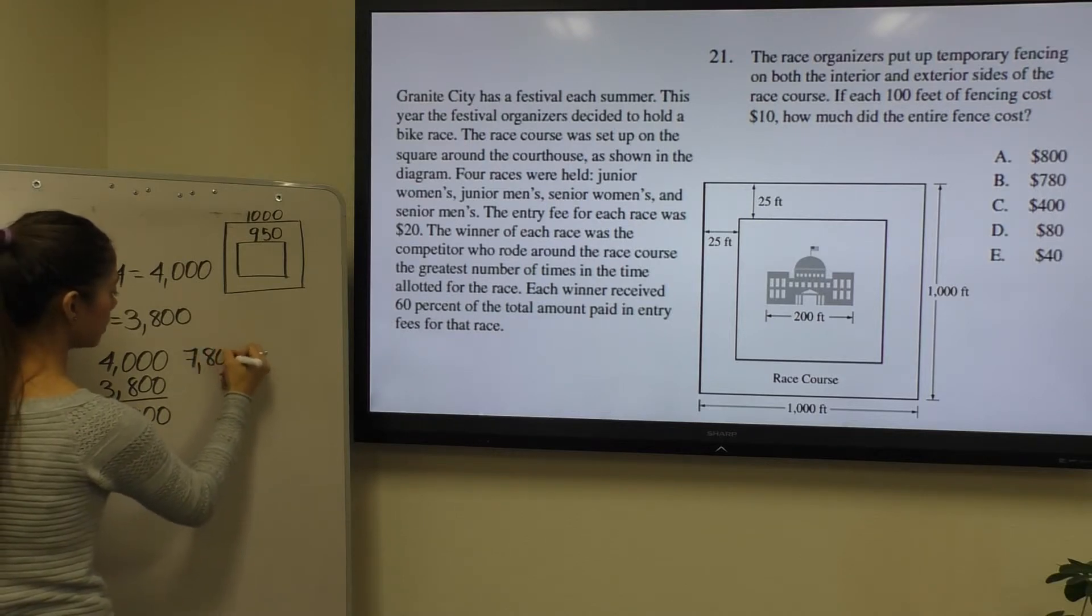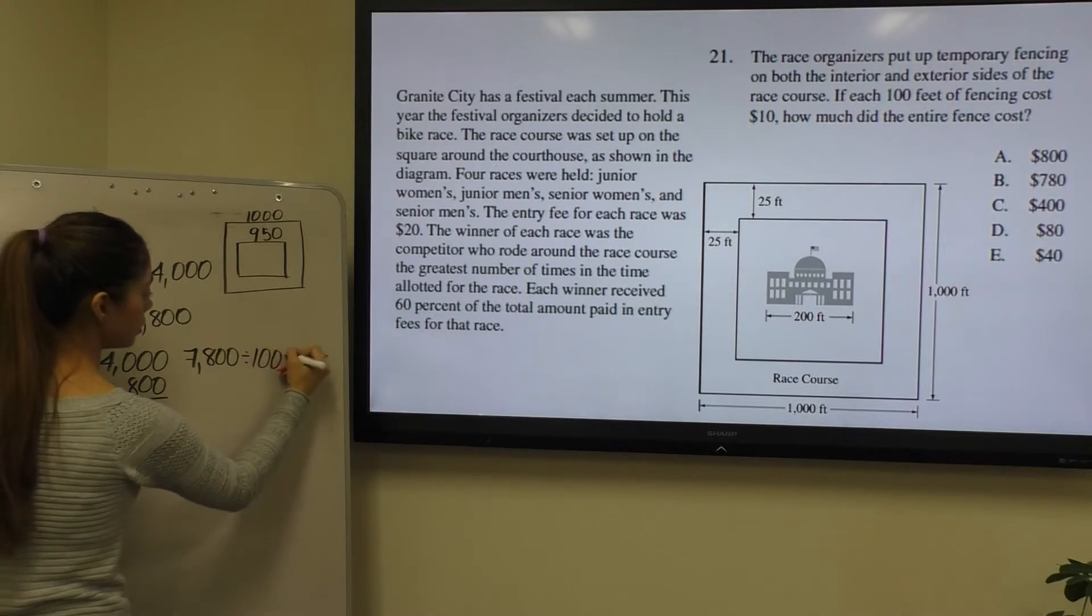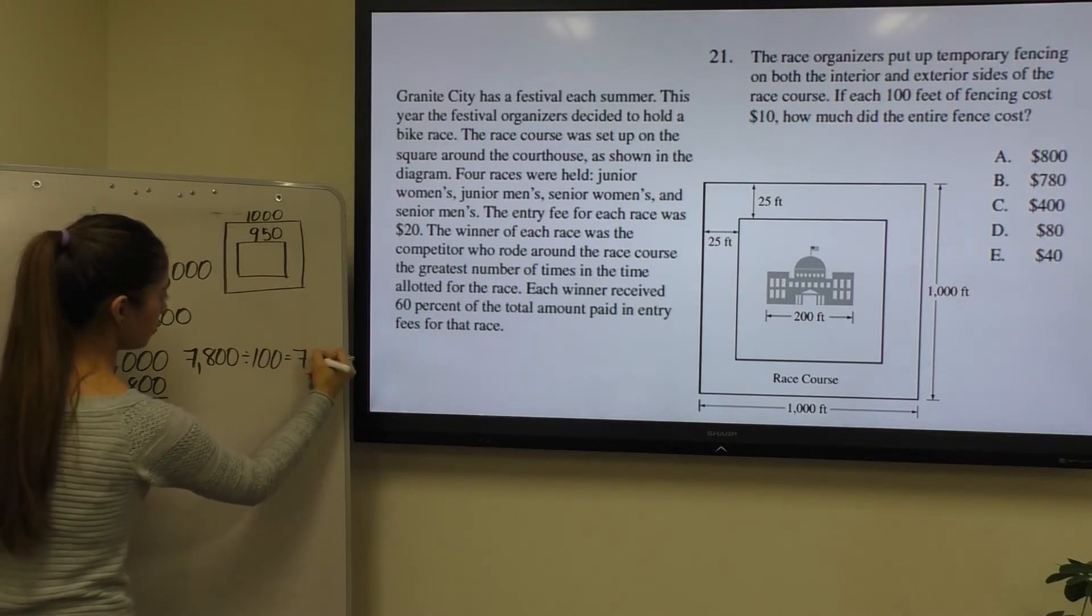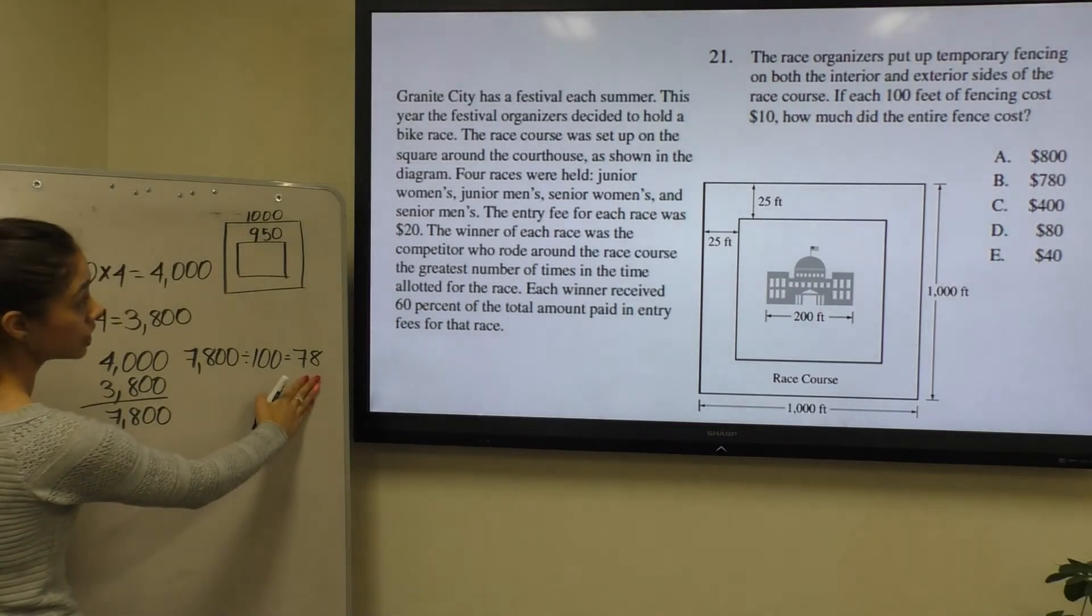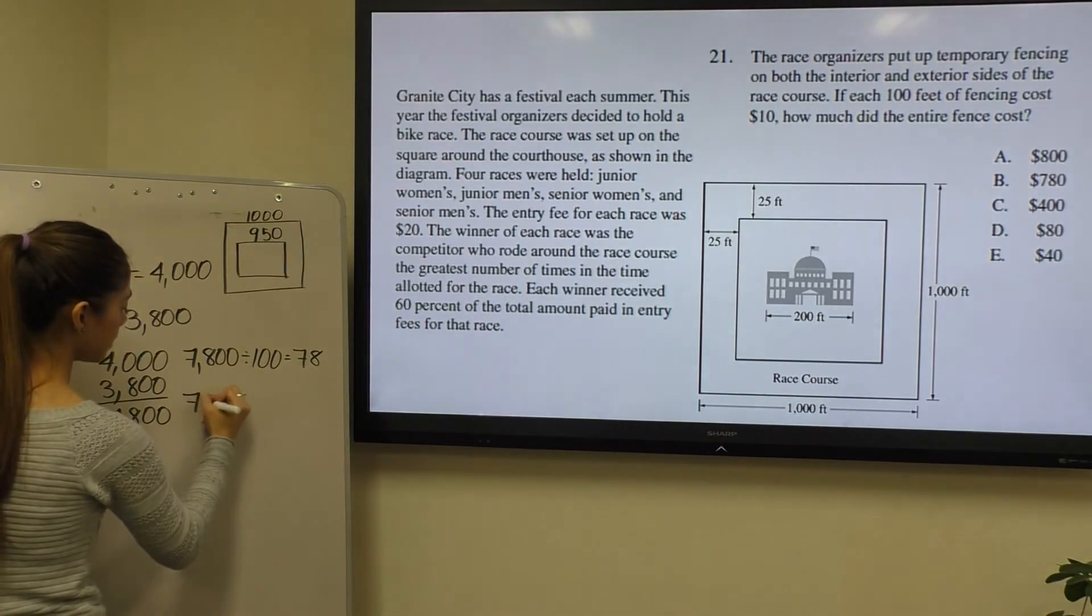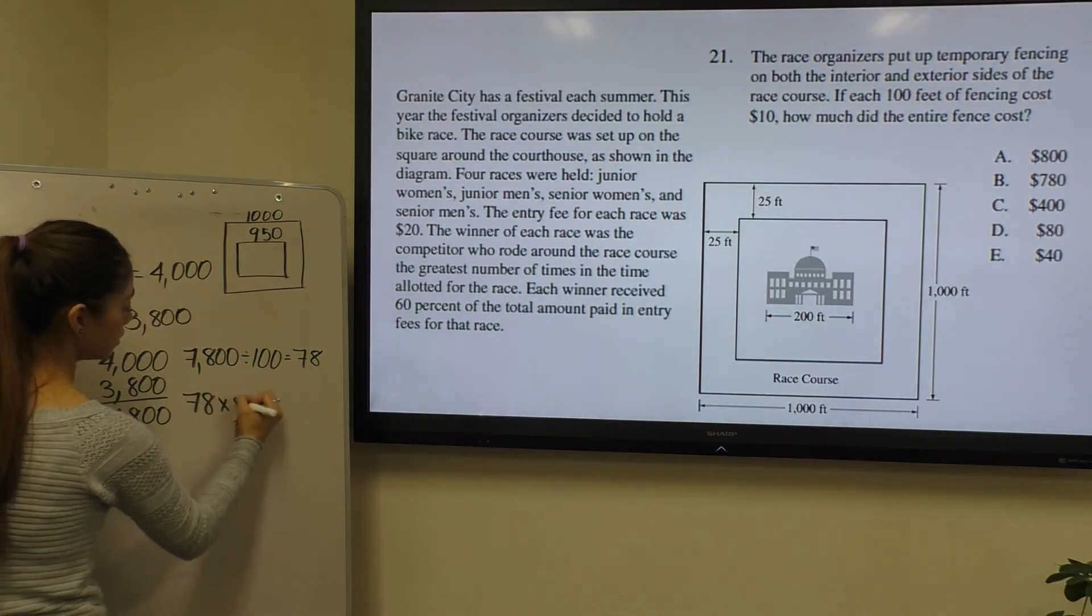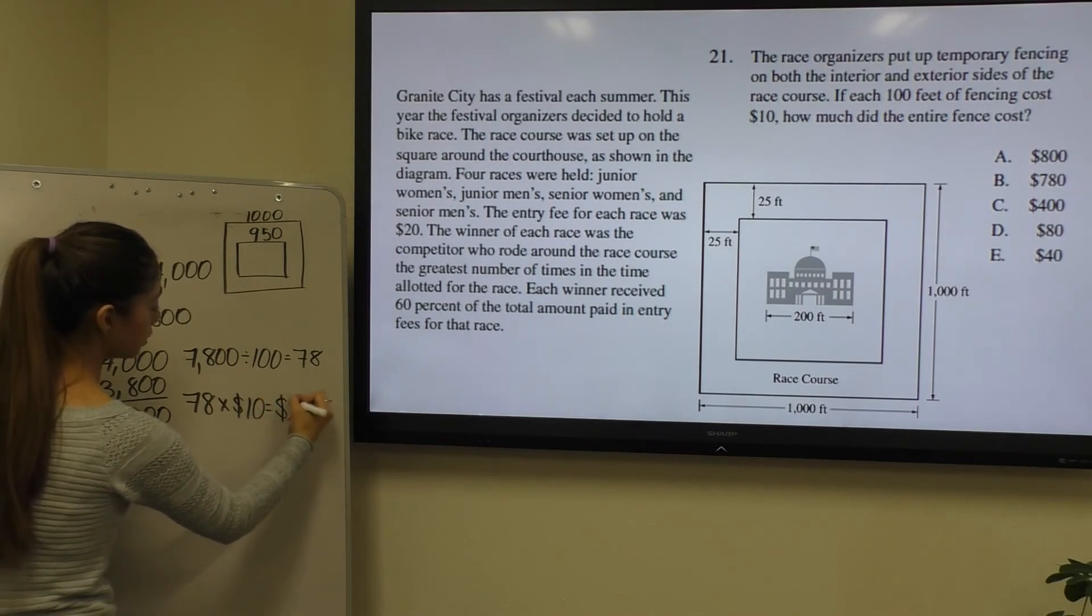To get a total of 78 units of 100. So there's 78 units of 100, and each one of these units is $10. Therefore we multiply 78 times $10 to give us a total of $780 for all of the fencing.